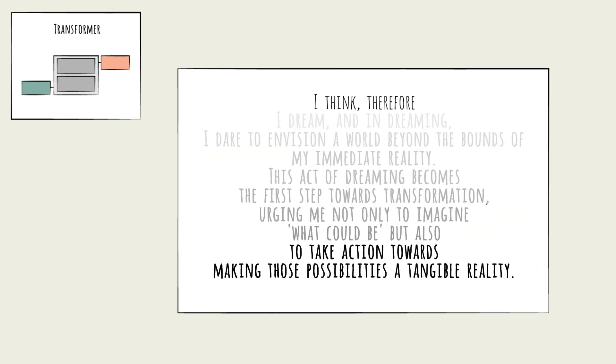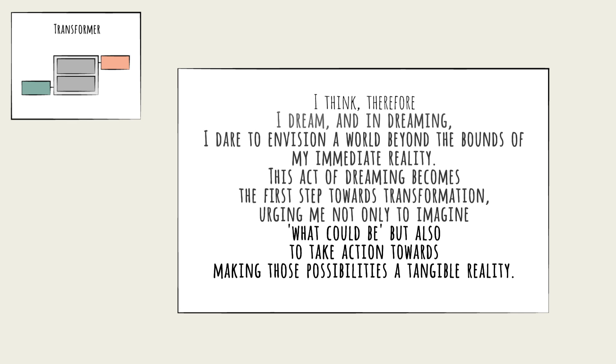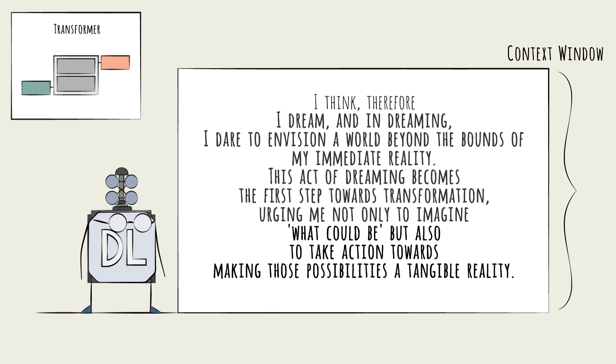In our example, the transformer would input and process all the recently generated text at once, up to a certain number of tokens. This is called the context window, and gets fed to the model in bulk at each step. The model, therefore, has a full working memory of the entire recent context before picking the next word.